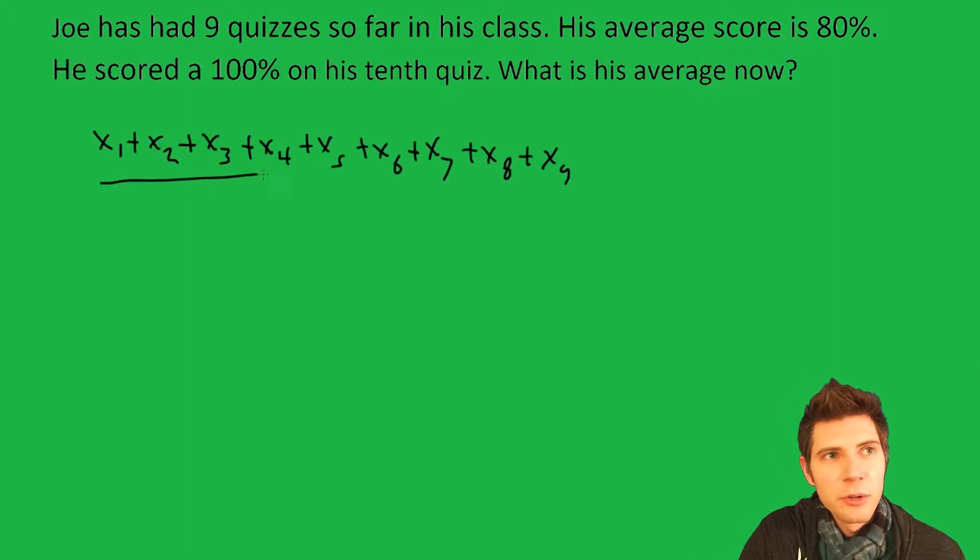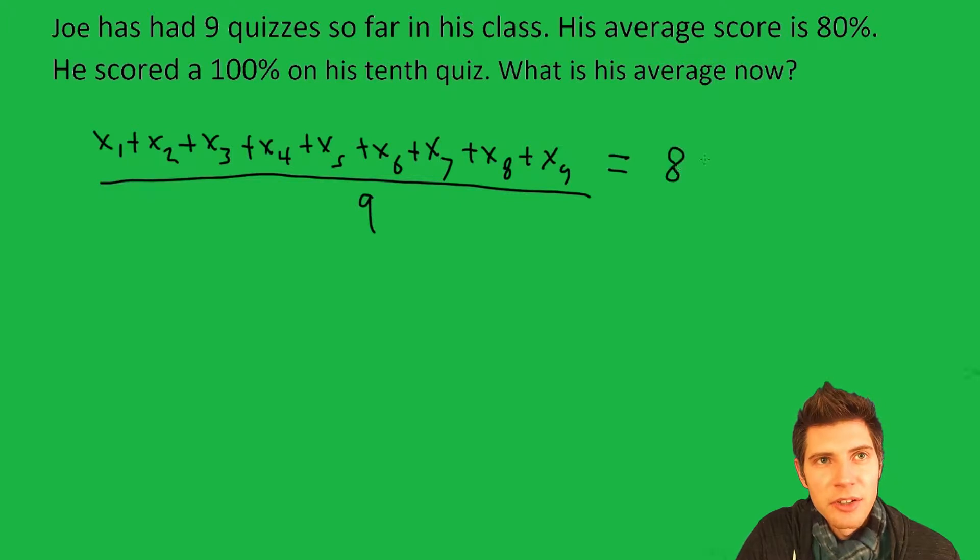There's the sum of his nine quizzes. When we divide it by the number of quizzes, which is nine, we know that the average score is 80%. We don't know what any of the individual quizzes are, but we do know that the sum of all of them divided by nine equals 80.